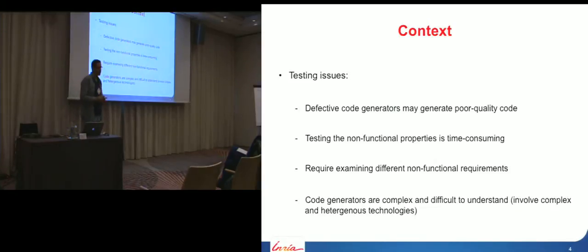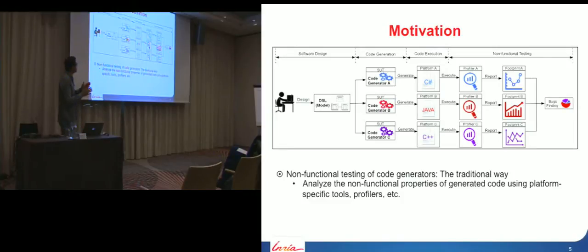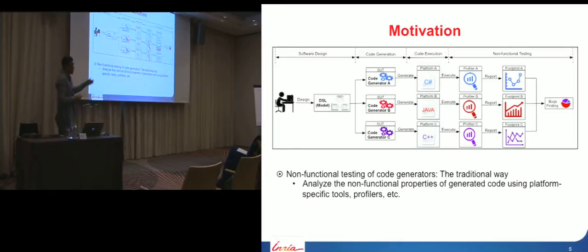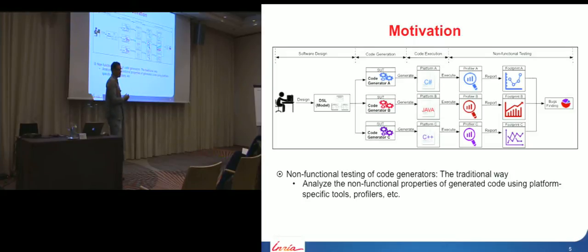As a code generator maintenance scenario, we distinguish in this figure four steps: first, software design; then code generation; then code execution; and finally non-functional testing. Starting from a DSL that defines the behavior of the software, testers generate different versions of the code — for example, generating code in C#, Java, and so on from the same model. Therefore the software needs different profilers specific to different platforms to extract information about performance and resource utilization.